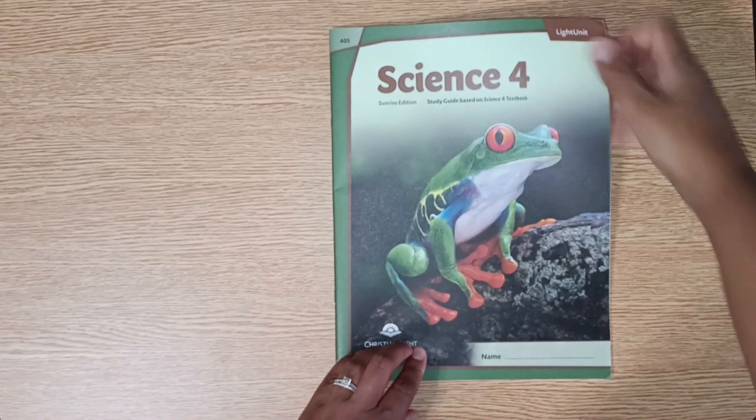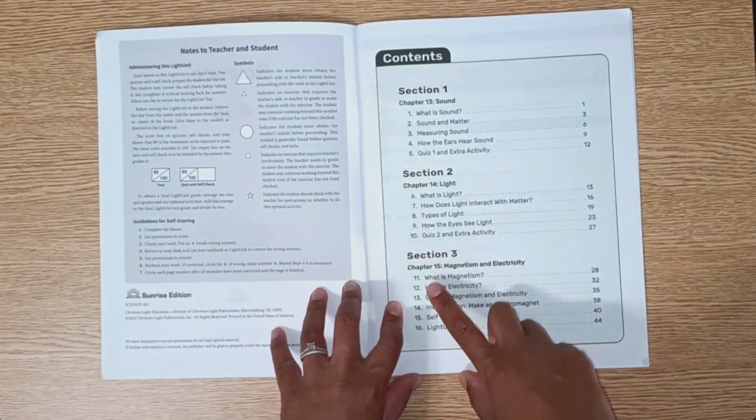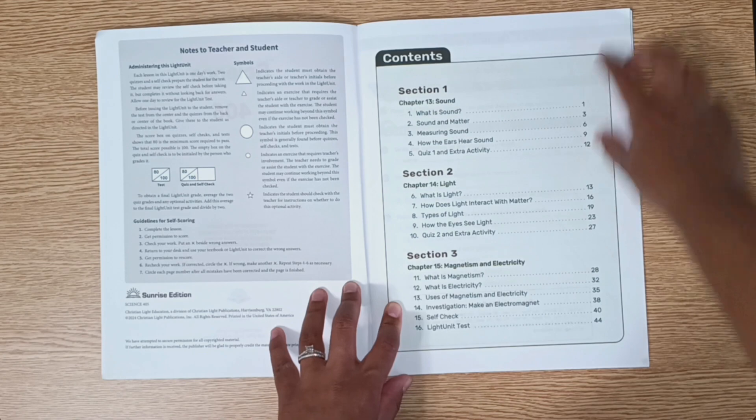This is the fifth and final light unit. Section one is on sound. Section two is on light. And section three is on magnetism and electricity.